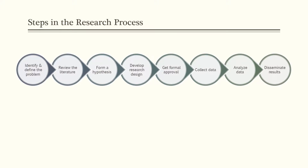Most of you will be at least somewhat familiar with the steps in the research process, but it's important to know each step and what it involves. We start by identifying the problem or question — you can use exploratory research to define the precise problem you want to focus on. Once you have the problem identified, you should perform a literature review, which involves finding previous research done on the same or similar topic. This can help you refine your question even further.